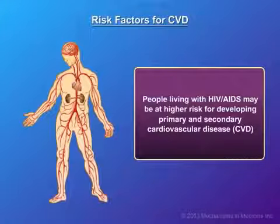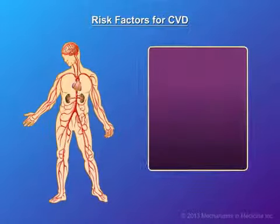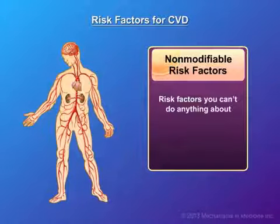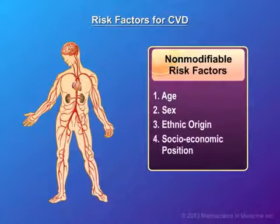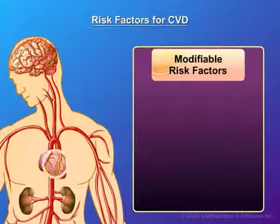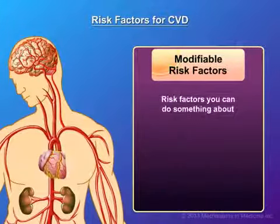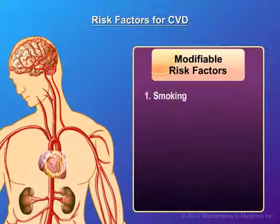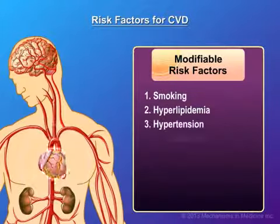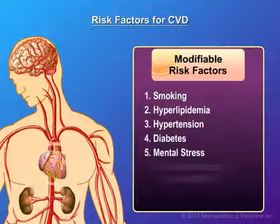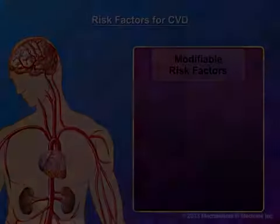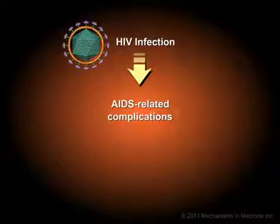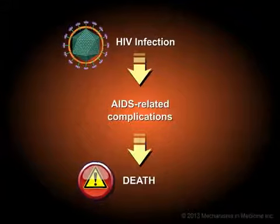People living with HIV or AIDS may be at higher risk for developing primary and secondary cardiovascular disease. Non-modifiable risk factors — things you can't do anything about — include age, gender, ethnic origin, and socioeconomic position. Modifiable risk factors — things you can do something about — include smoking, hyperlipidemia, hypertension, diabetes, mental stress, stimulant drugs legal or illegal, and occupational carcinogens. AIDS-related complications are ultimately how patients die from HIV infection in the absence of therapy.